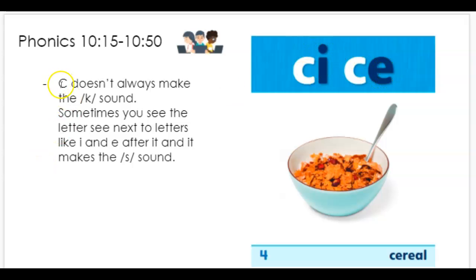So C doesn't always make the K sound. Sometimes you see it with letters like E and I and also Y, and it makes the S sound. C-K is called a hard C, and S is called a soft C.